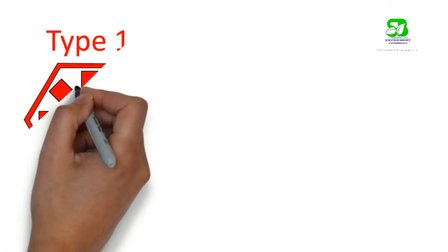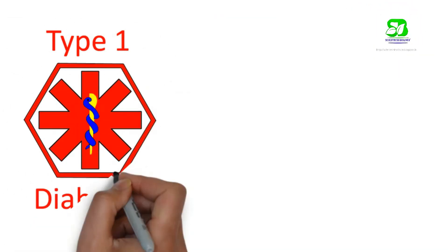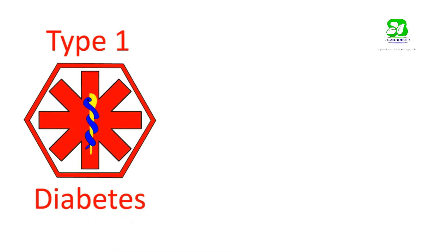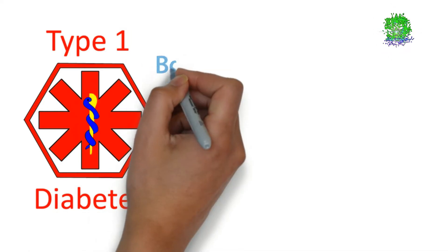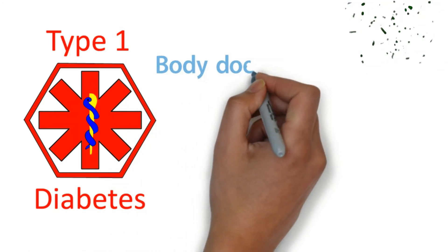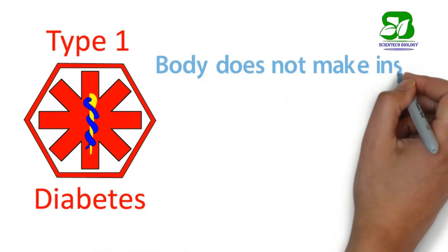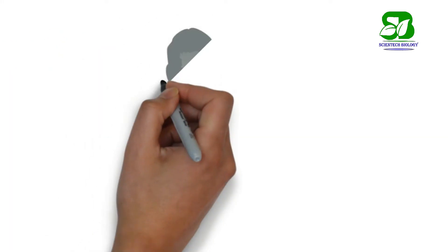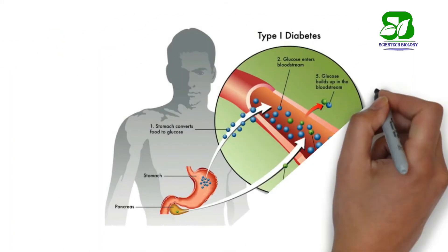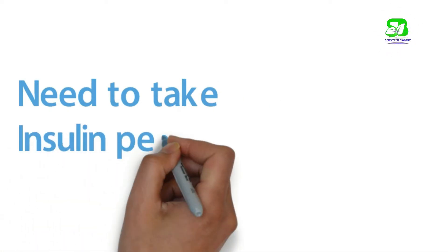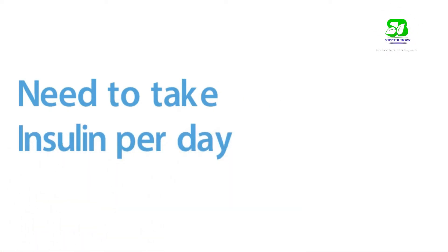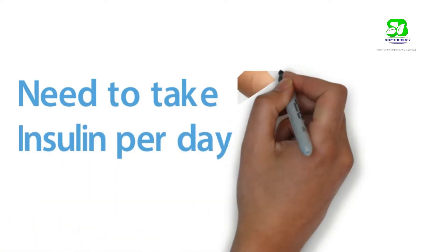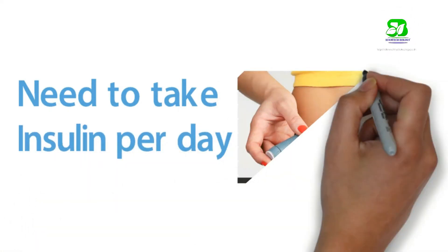If you have Type 1 diabetes, your body does not make insulin because your immune system attacks and destroys the beta cells of the pancreas that make insulin. People with Type 1 diabetes need to take insulin every day to stay alive.